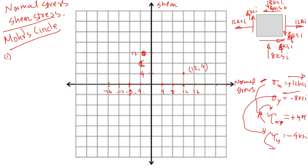We connect these two points — this line is the diameter of the Mohr's circle — and draw the circle. As we move along the Mohr's circle, the normal stress and shear stress change. Where the circle crosses the horizontal axis there is zero shear stress. As we move along, the shear stress increases and normal stress decreases. At the top of the circle we have the highest shear stress.